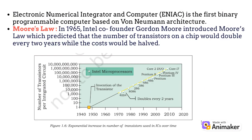In 1965, Intel co-founder Gordon Moore introduced Moore's law, which predicted that the number of transistors on a chip would double every two years while the costs would be halved.